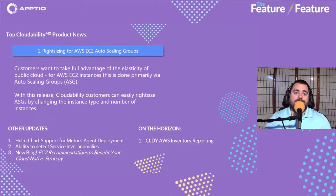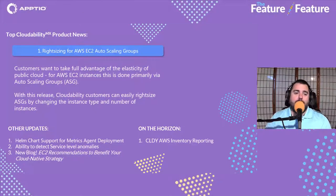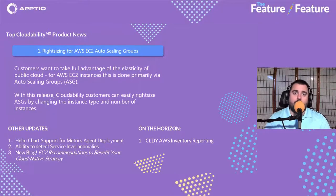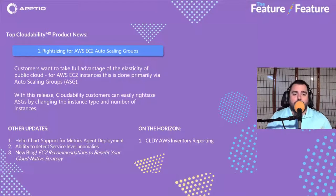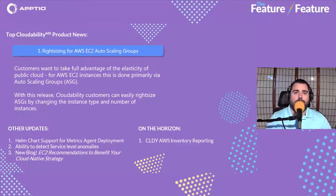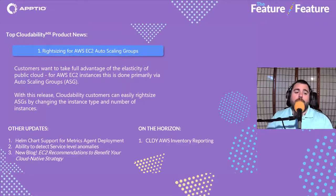Moving on to Cloudability — excited to announce that right sizing for AWS EC2 Auto Scaling Groups has dropped in Cloudability, so that feature is live and ready to go. Auto Scaling Groups let customers take full advantage of the elasticity of the public cloud, where you can set parameters for groups of EC2 instances to scale up and down based on time and usage. The right sizing recommendations allow you to see those auto scaling groups and the instances within them, and make recommendations for different EC2 instances that may save you money.